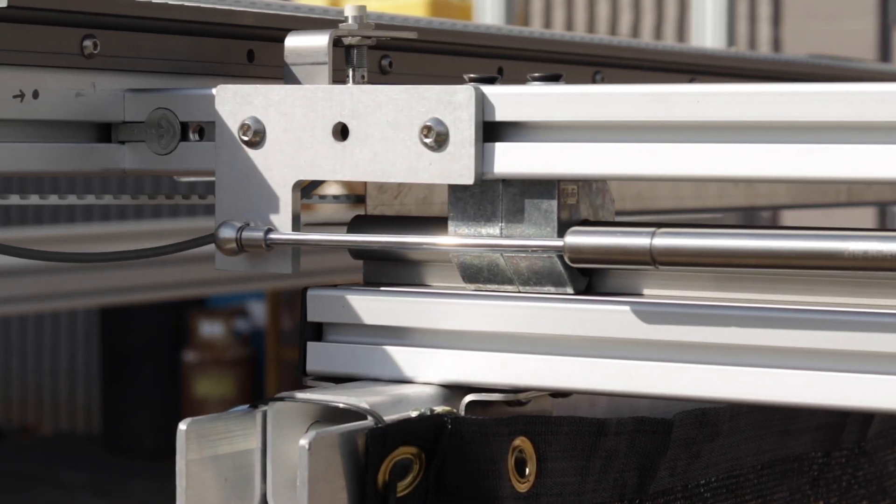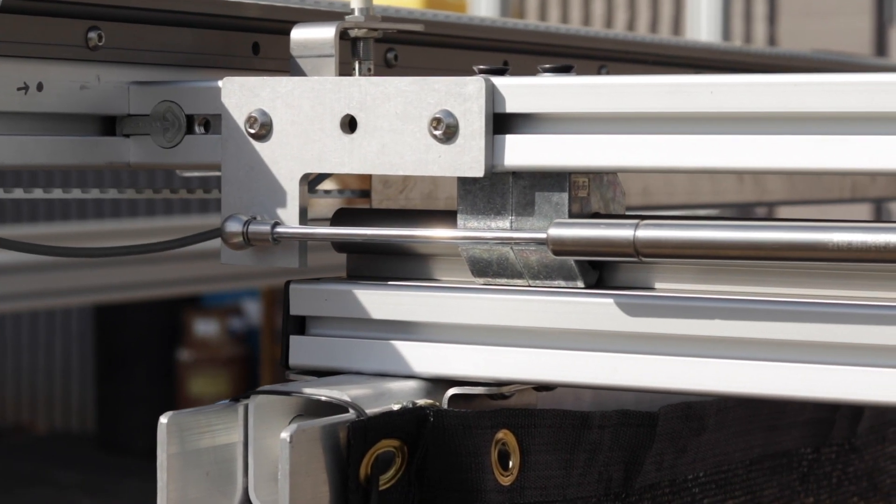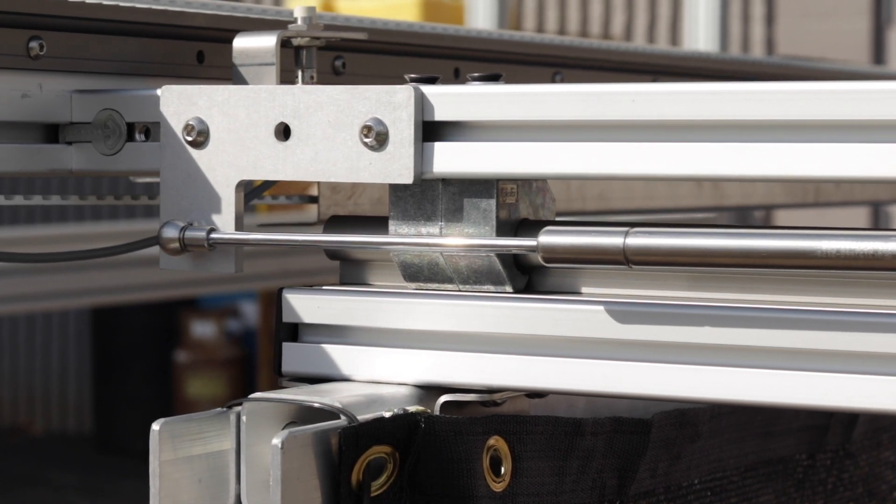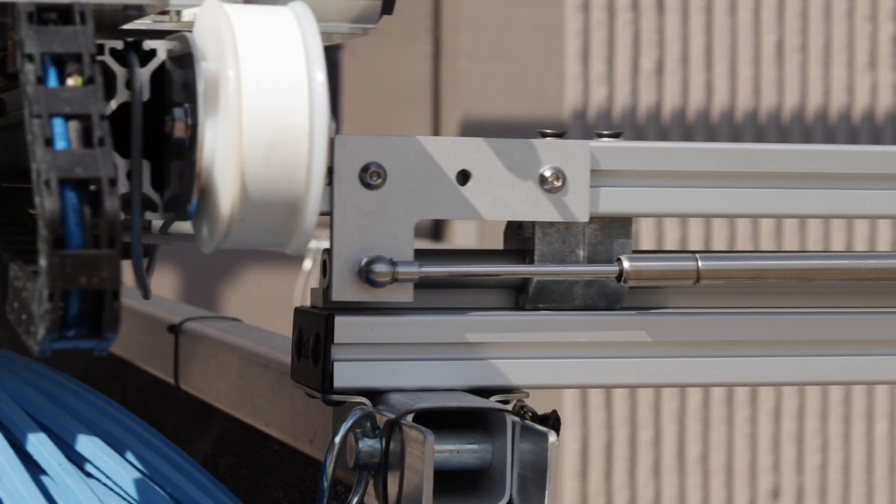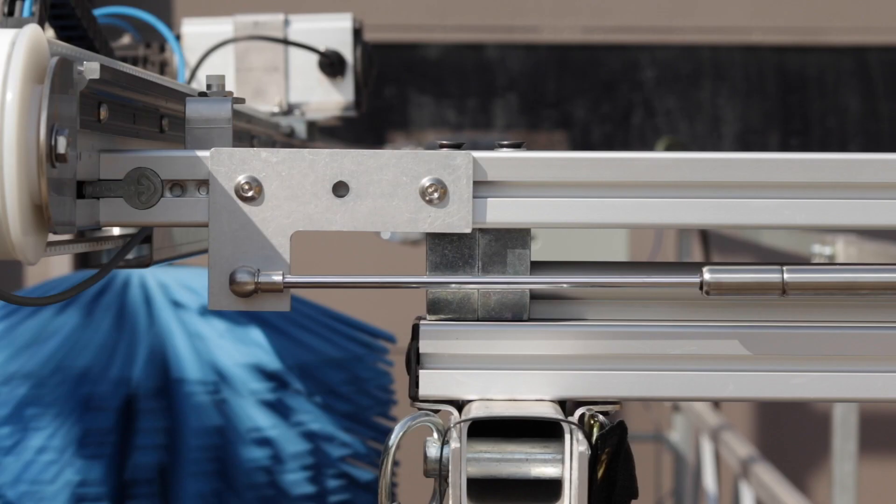An added benefit with this design can be seen when the system is fitted with its optional retraction package. If so, the brush is able to walk itself around protrusions up to 8 inches in depth.